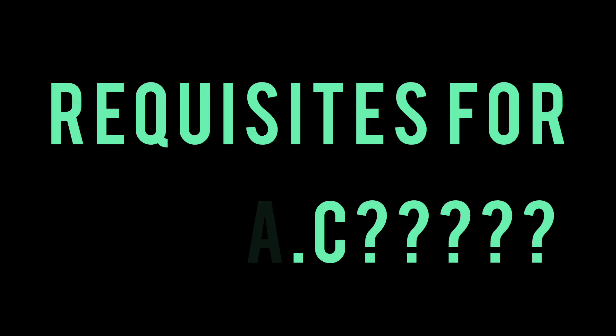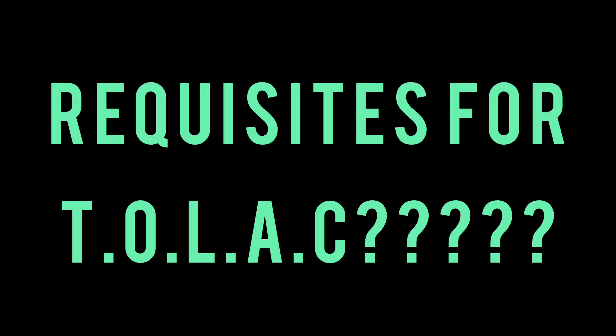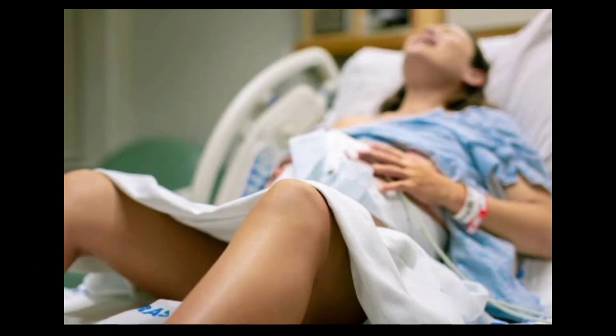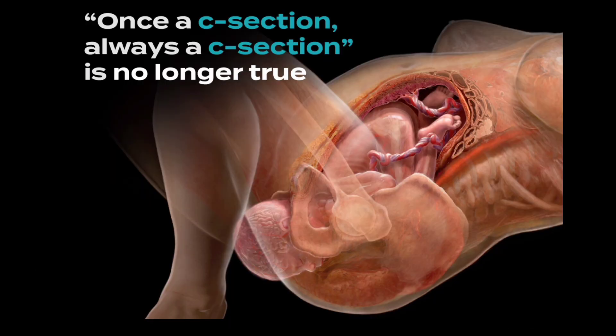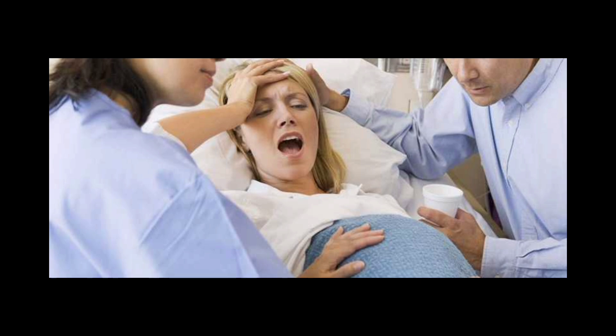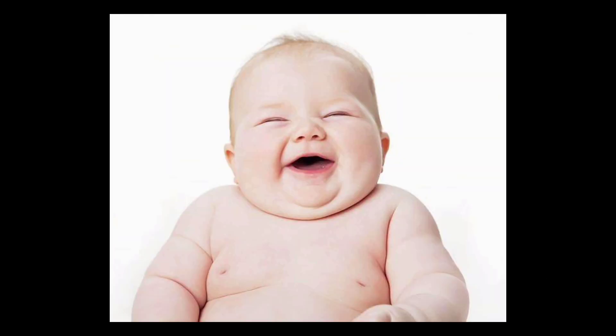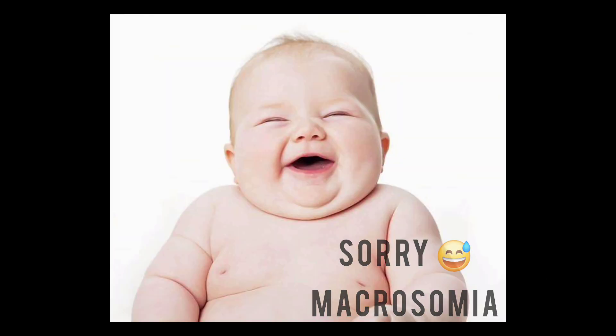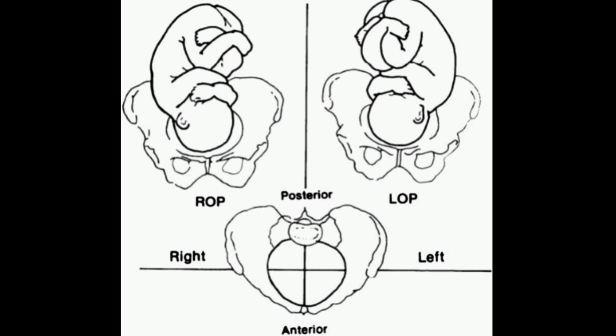The next question is: who are the candidates for a trial of labor? Those fit for trial of labor include: history of prior vaginal delivery, history of prior successful VBAC, onset of spontaneous labor at less than 40 weeks of gestation, fetal weight not suggestive of macrosomia, and non-recurrent indications for the previous cesarean section — for example, fetal malpresentation or fetal distress.